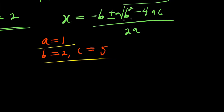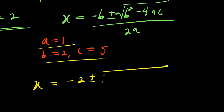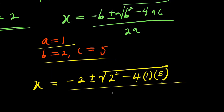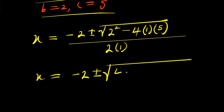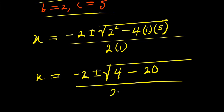Applying that here, inserting these values for a, b, and c, we have x equals negative b, which is negative 2, plus or minus the square root of b squared — that is 2 squared — minus 4 times a times c, that is 5, divided by 2 times a, that is 2 times 1. So from here, x equals negative 2 plus or minus square root of 4 minus 20, divided by 2.